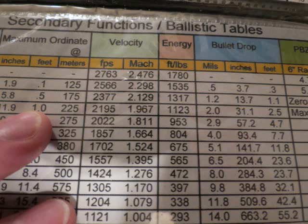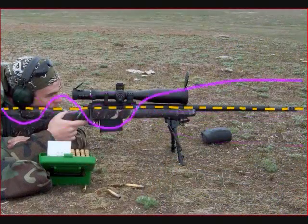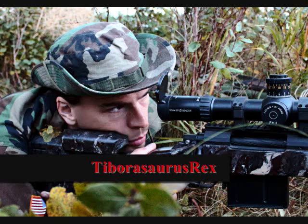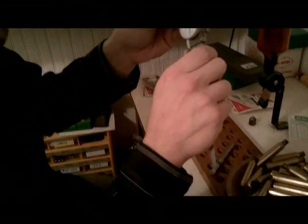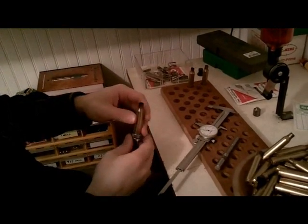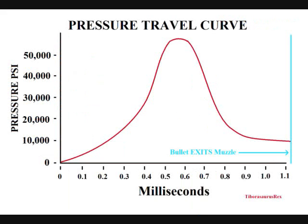Understanding this topic will really help you improve your odds for a first-round hit at long range. A lot of times when you have strange misses at long range, people don't realize that's attributed to variations in internal ballistics. Internal ballistics — as a definition — is everything going on inside the rifle system before your projectile actually exits the muzzle. Although it's not practical to deal with every tiny variation, we can come up with a very effective, streamlined system for our ballistics tables.